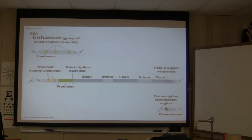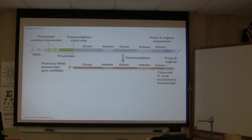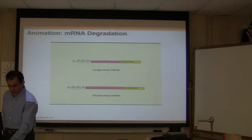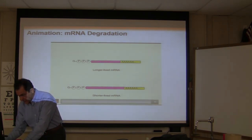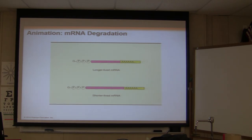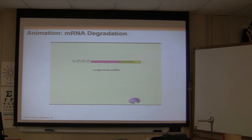This is the proximal control element. The exons and introns are made, and so on. A video says a few things: the lifespan of mRNA molecules helps determine how much of a protein is made. Nucleotide sequences that affect mRNA longevity are often found in the three-prime untranslated region following the stop codon. Enzymes attack the poly-A tail first and eventually the rest of the mRNA. A eukaryotic mRNA molecule may last from hours to weeks — the longer an mRNA lasts, the more protein is made.